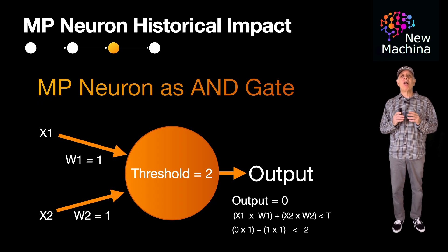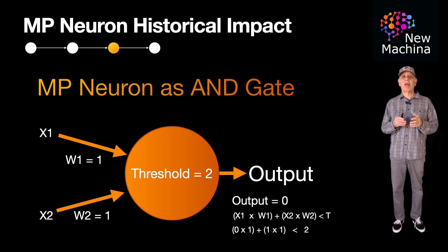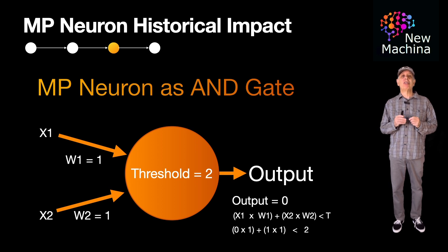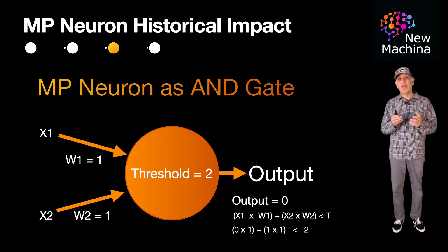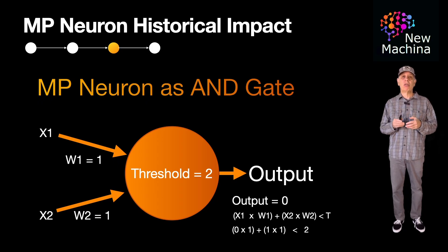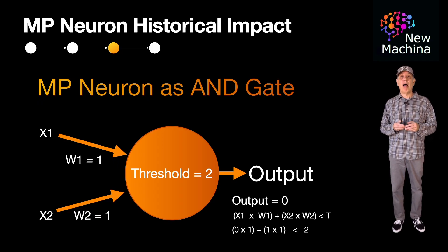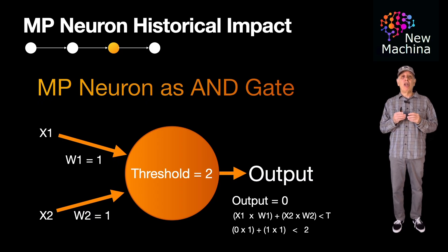Okay, so what is the historical impact of the MP Neuron? Though quite simple compared to modern artificial neurons, the McCullough-Pitts Neuron introduced key concepts of threshold-based activation and the idea of neurons as computational units. These ideas are central to the development of more advanced artificial neural networks. So now you should have a good high-level conceptual understanding of the MP Neuron, including its role in the history of neural networks and how it can be used to implement basic logic gates.